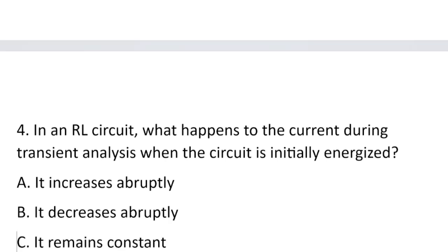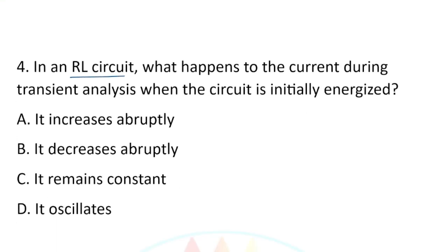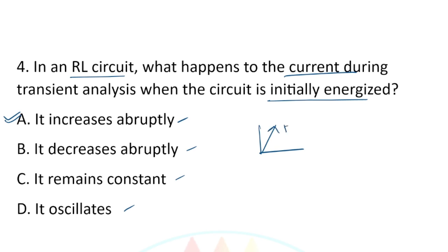Question number four: In an RL circuit, what happens to the current during transient analysis when the circuit is initially charged? Option A, it increases abruptly. Option B, decreases abruptly. Option C, remains constant. Option D, it oscillates. The correct answer is option A — it increases abruptly. When the circuit is energized, the current increases suddenly from zero.